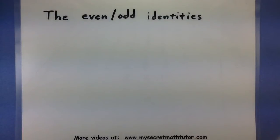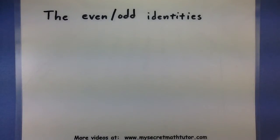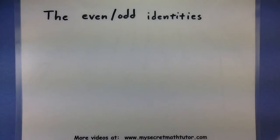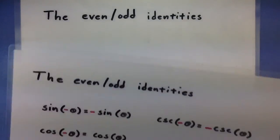Today I want to talk about the even and odd identities found in trigonometry. These are excellent identities that allow us to handle situations where we're looking for the value of a negative angle. Let me show you these identities.